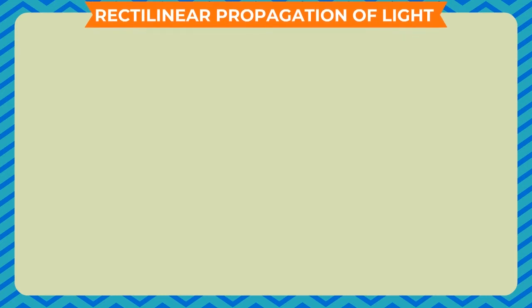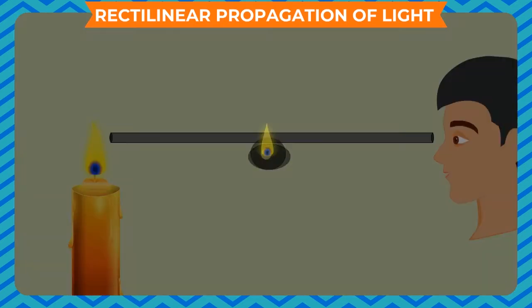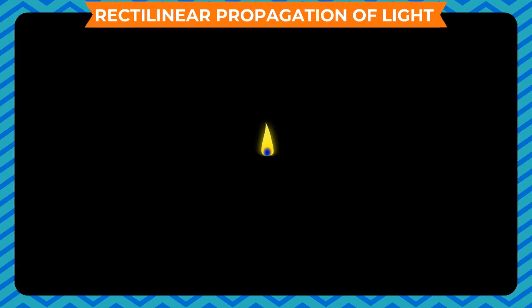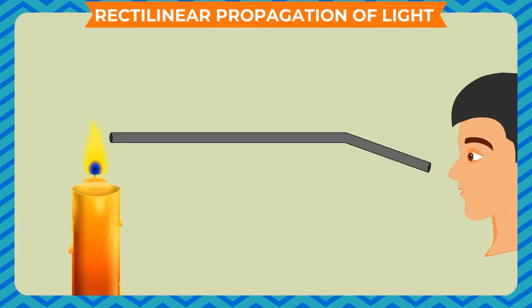To show that light travels in a straight line, take a candle, light it and place it on a table. Now look at the lighted candle first through a straight pipe and then through a bent pipe. You observe that you are not able to see the candle flame through a bent pipe. This is because light travels along a straight path.